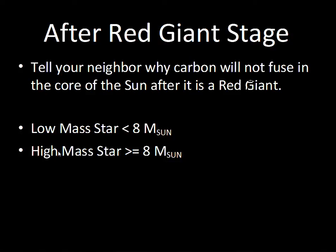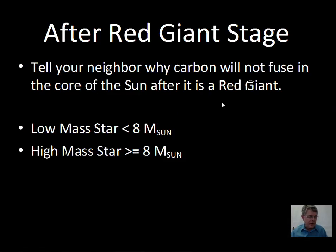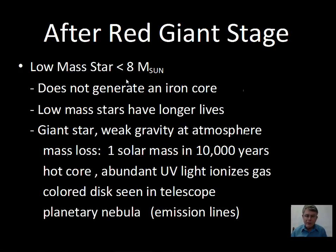Carbon does not fuse in stars of the sun's mass or a little bit larger. So we lose that energy source. Let's call the division between low and high mass stars eight solar masses. In this video we're talking about what happens to stars less than eight solar masses. These stars do not fuse carbon all the way up to iron producing elements in the periodic table.